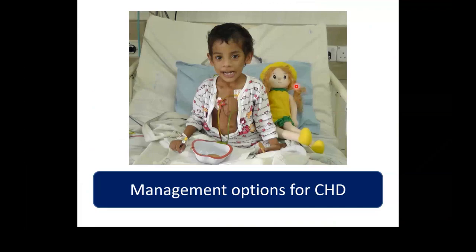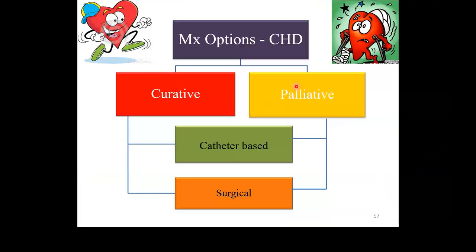Management options can be curative or palliative. Curative means you do surgery or catheter-based intervention and cure it — close a hole, open a stenosed valve. Palliative means you cannot cure the condition but you do surgery to improve the child's quality of life. For example, if the child is very blue, you put a shunt; if there is too much pulmonary blood flow, you put a PA band. These are palliative surgeries — you don't cure, but you improve their quality of life.